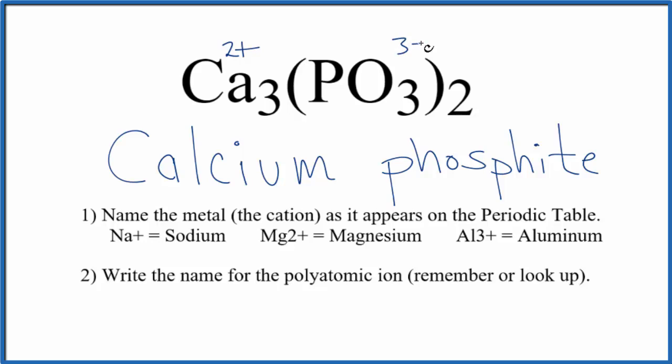Two times 3- is 6-, three times 2+ is 6+. So these numbers add up to zero—they give us a net charge of zero for the compound. That's why we need three calcium atoms.